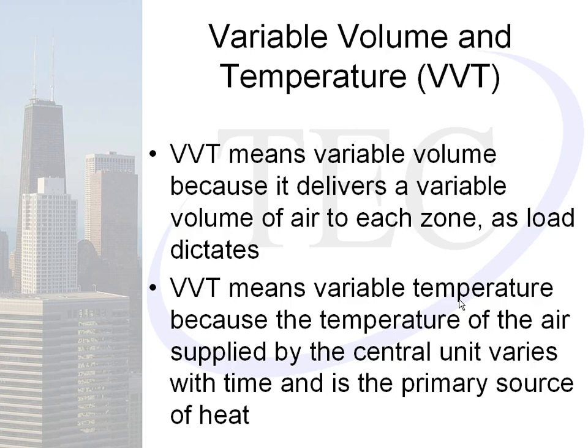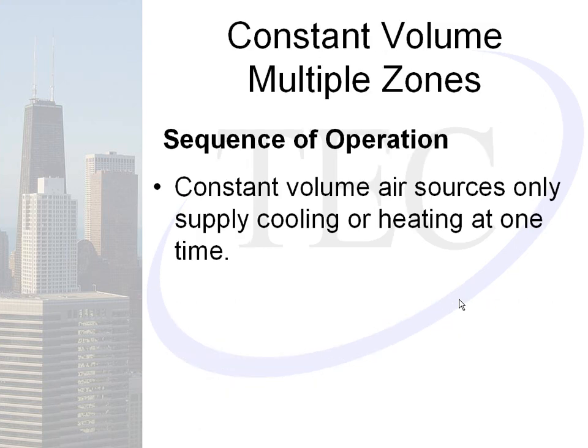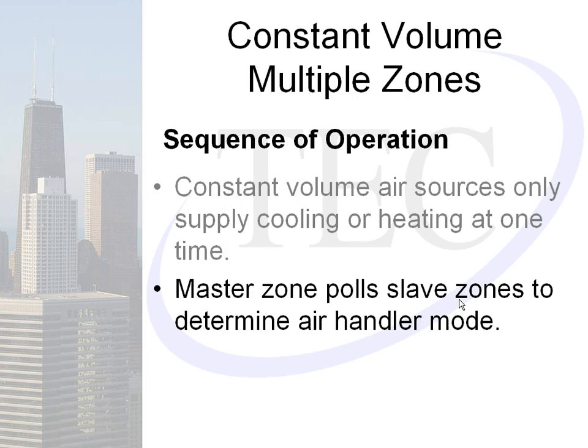VVT stands for variable volume, variable temperature. It's variable volume because it allows the volume of air to be distributed as necessary per zone. Variable temperature means the rooftop can switch between heating and cooling, unlike a VAV system where the rooftop is in cooling mode constantly. The sequence of operation: the master zone polls all slave zones to determine the current mode of operation demand, tells the rooftop which mode to operate in, and the rooftop unit turns on and provides that level of air.